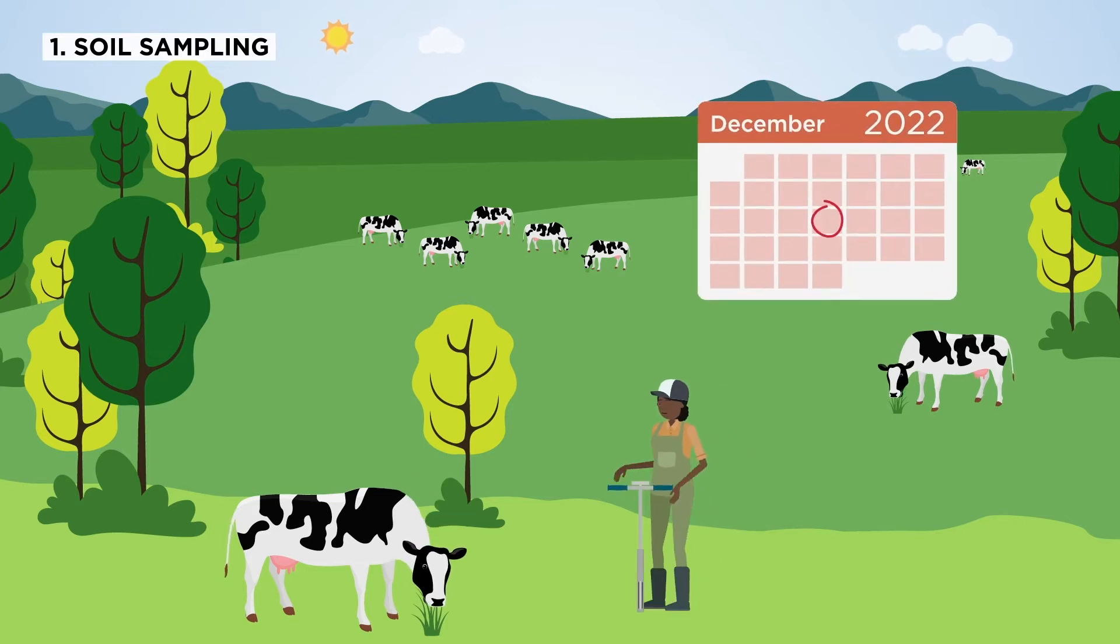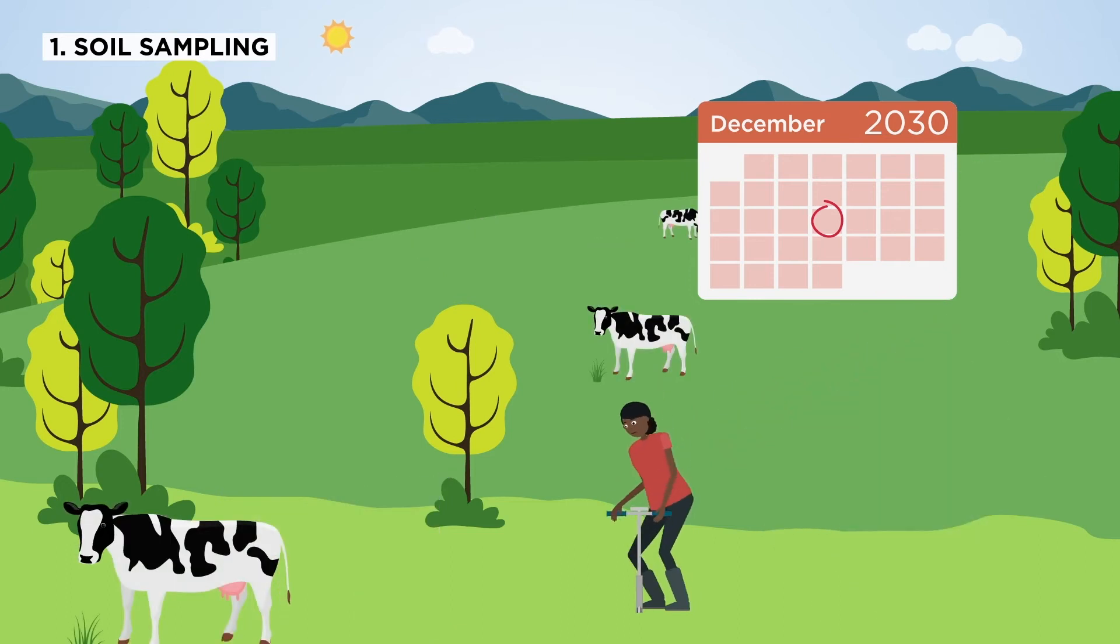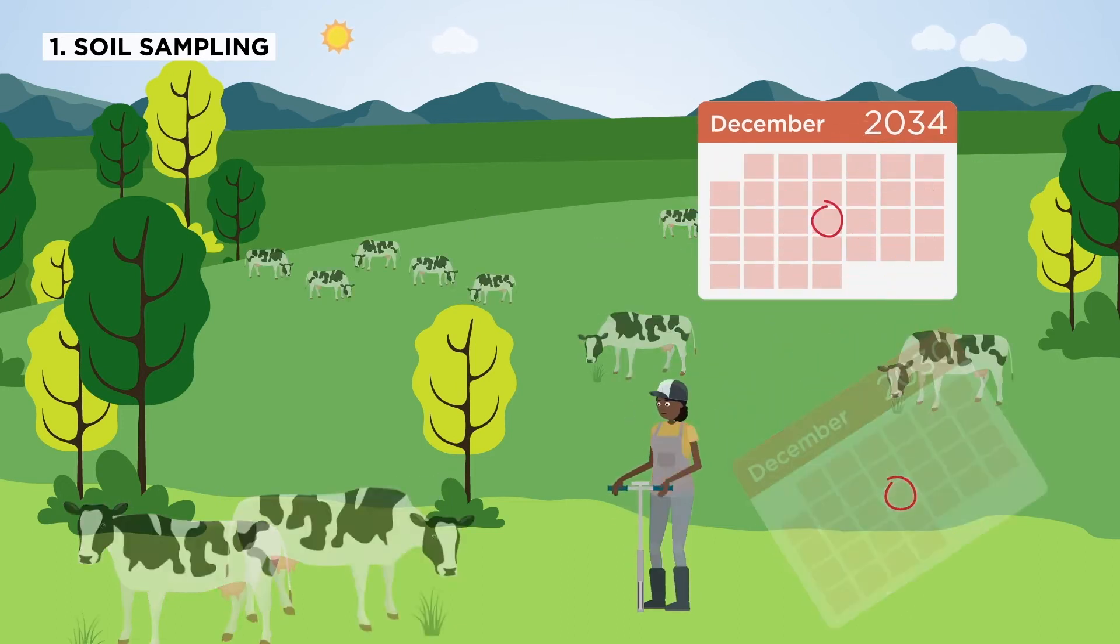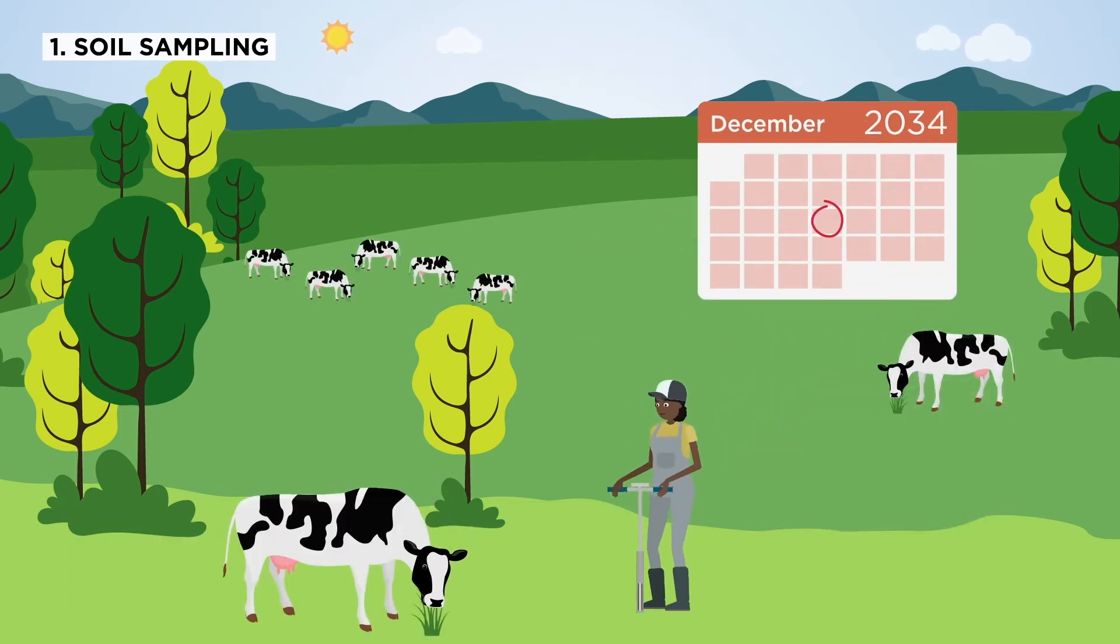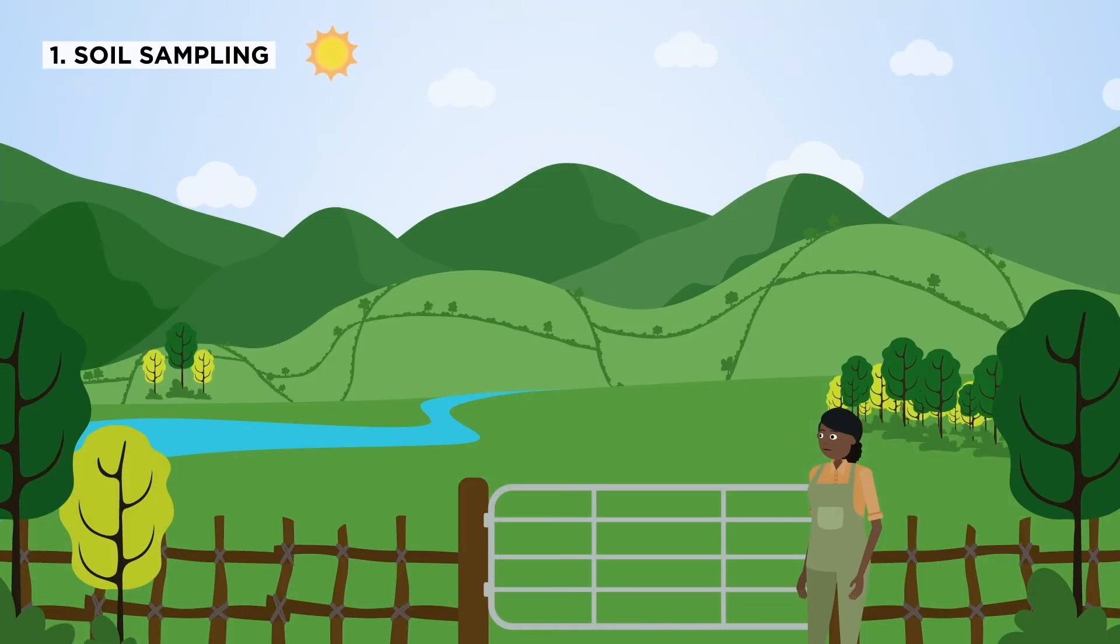The Catchment Care project recommends that farmers test their soil every four to five years, collecting soil samples at least six weeks after the last application of slurry or fertilizer. Soil samples should be gathered at regular intervals, following a W pattern across fields.